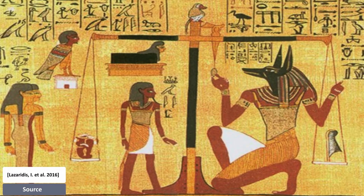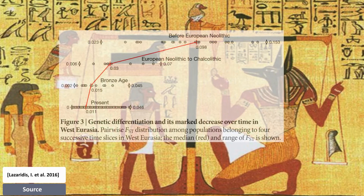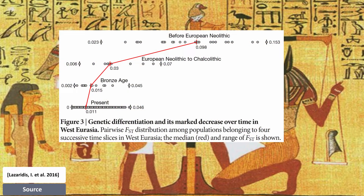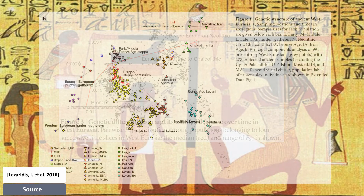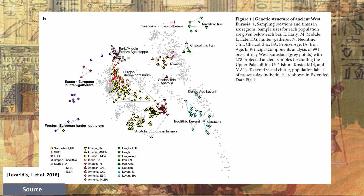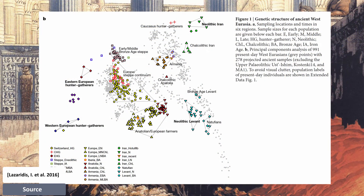Second, they find an extreme differentiation in the ancient Near East, but over time — pre-Neolithic, Neolithic, and Chalcolithic through Bronze Age and modern times — the genetic differentiation is significantly decreased in Western Eurasia. Thirdly, they find continuity between hunter-gatherers and early farmers in West Asia. There is no replacement of the original hunter-gatherer populations by immigrating farmer populations.